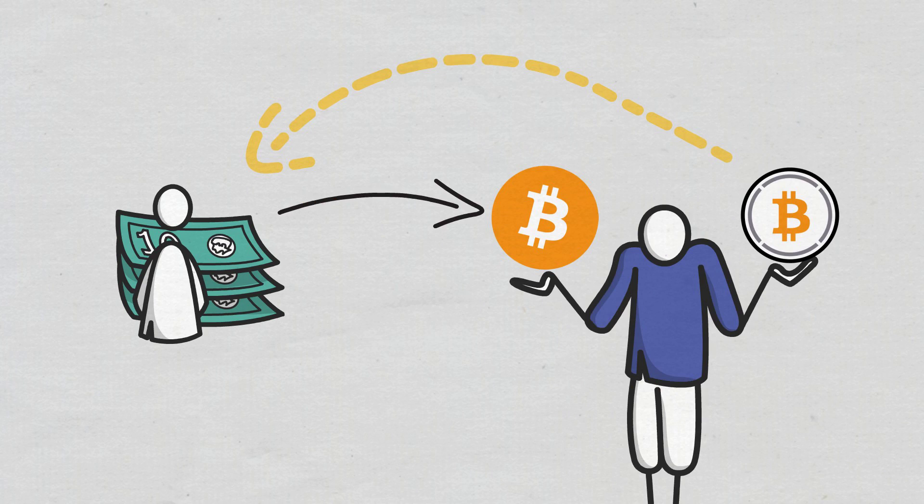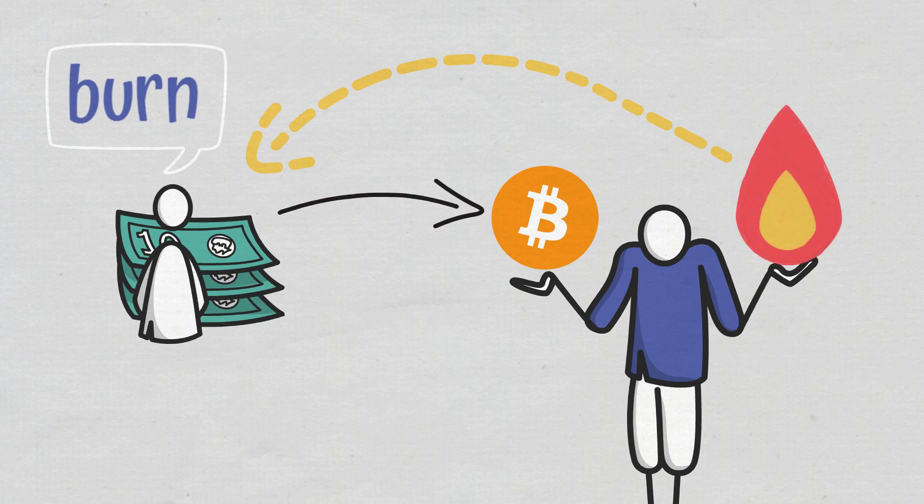If the merchant wants to exchange the wrapped Bitcoin back to Bitcoin, it puts in a burn request to the custodian. The latter burns the WBTC or unwraps it and releases BTC from its reserve.